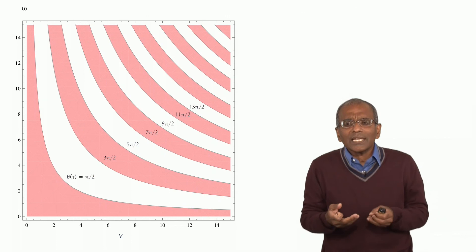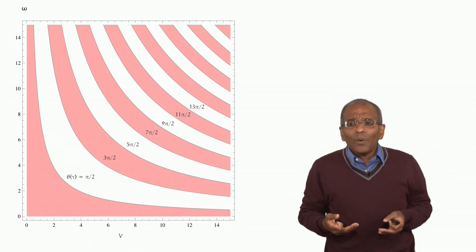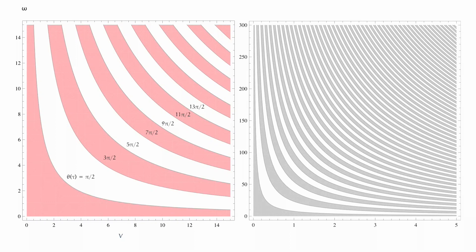And if we did that, we'd get a slightly more congested family of curves, all hyperbolic, of course, which look like this. Now notice, velocities are running up to 5 meters per second, angular velocities up to 300 radians per second.